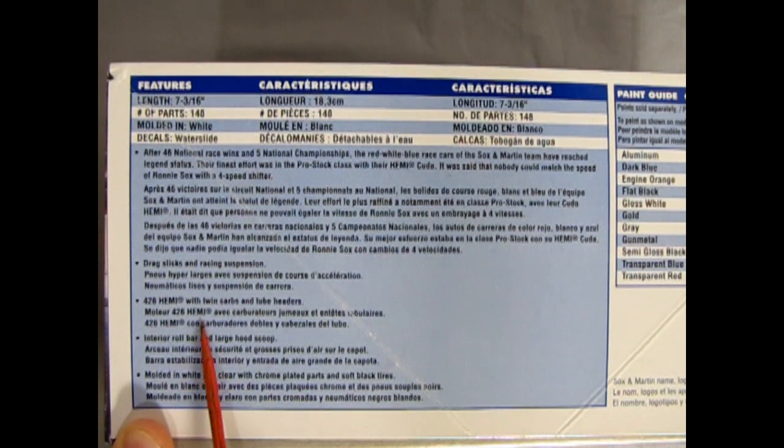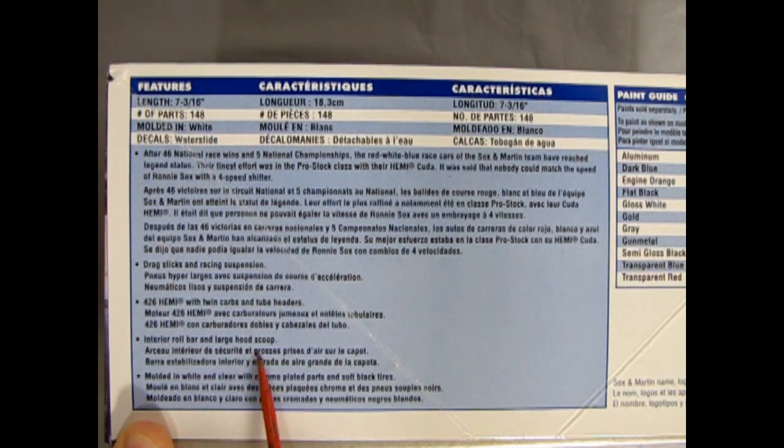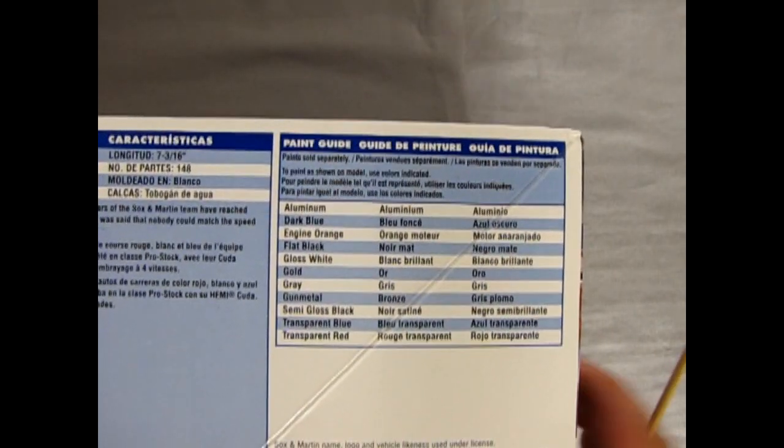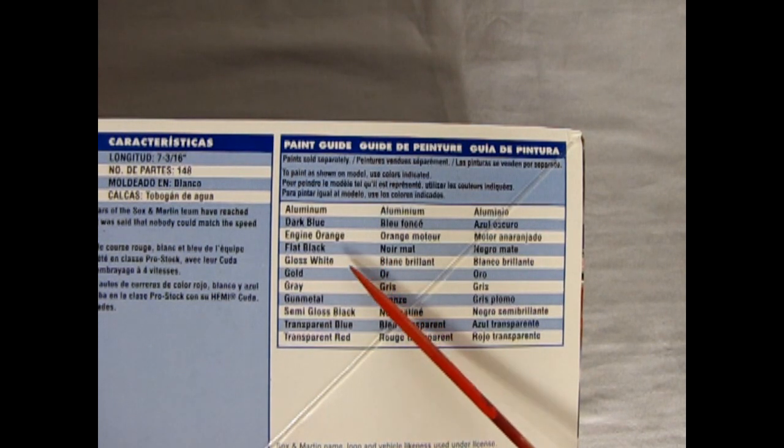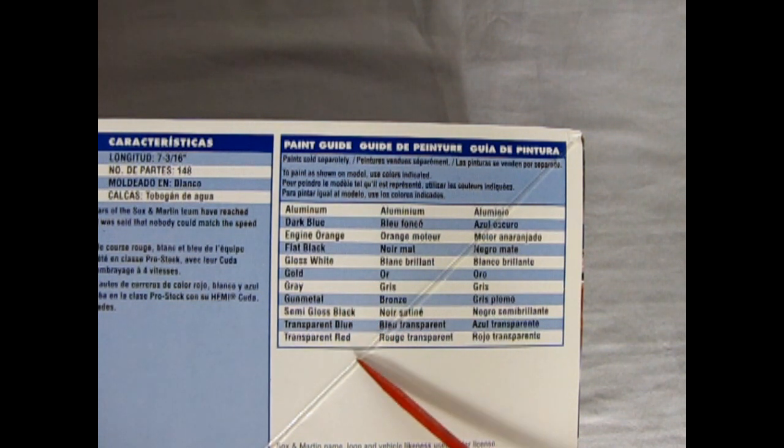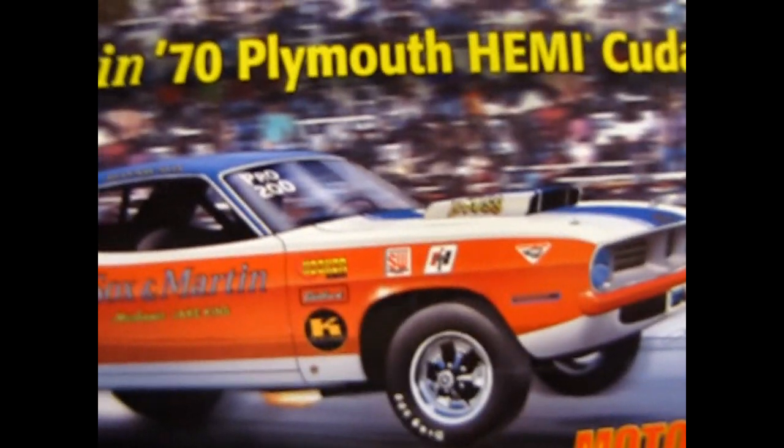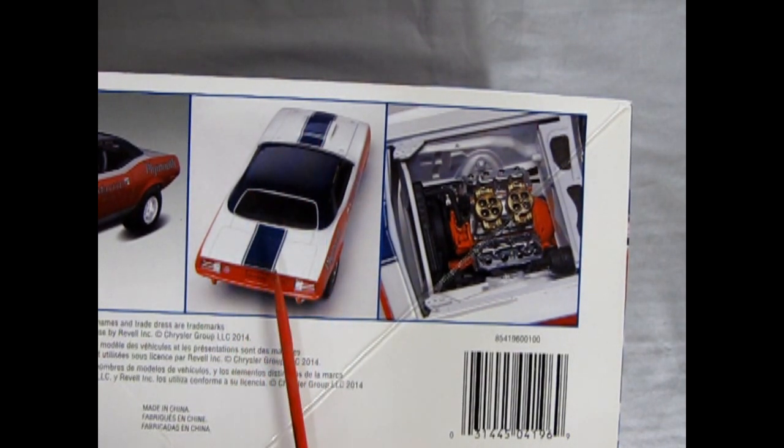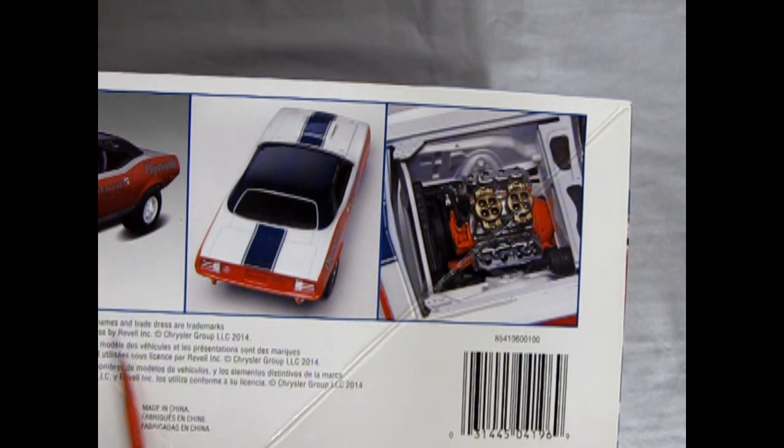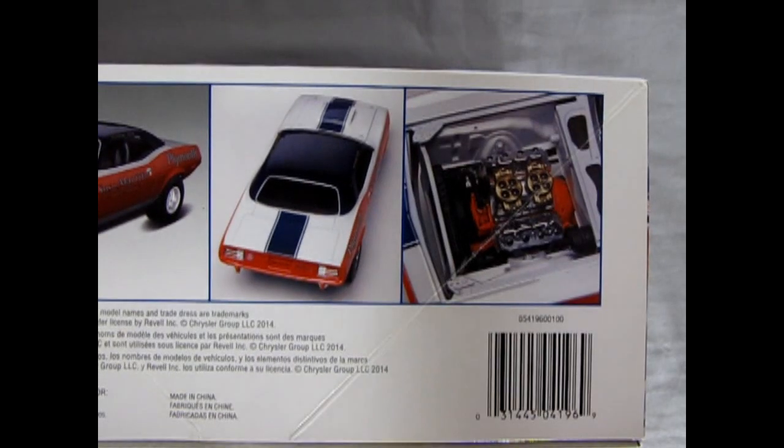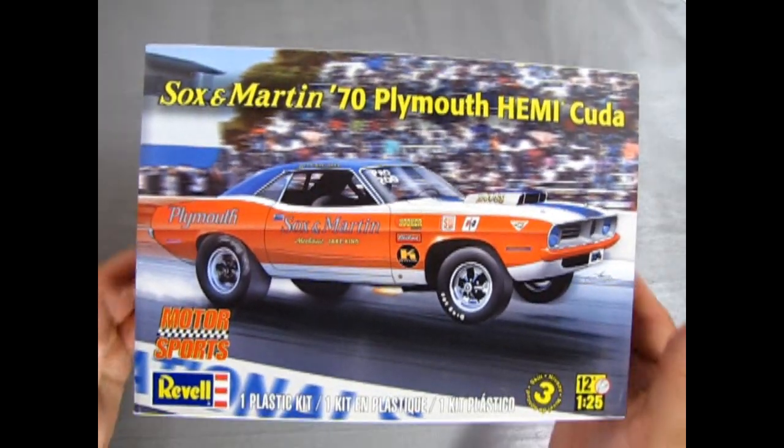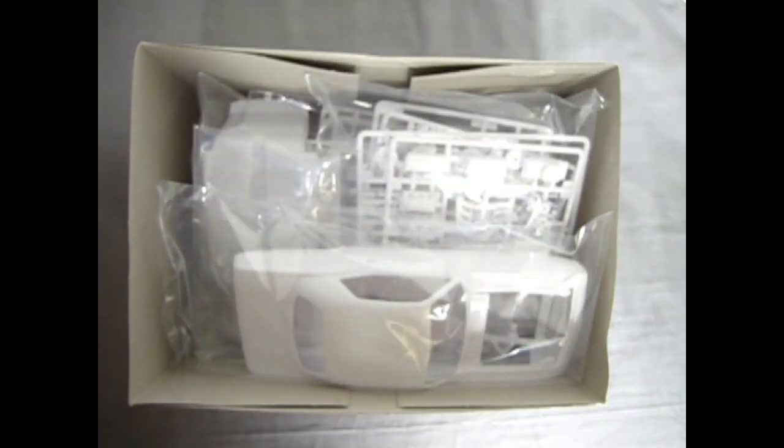We get drag slicks and racing suspension, a 426 Hemi with twin carbs and tube headers, interior roll bar and large hood scoop molded in white and clear with chrome plated parts and soft black tires. The paint colors needed include aluminum, dark blue, engine orange, flat black, gloss white, gold, gray, gunmetal, semi-gloss black, transparent blue and transparent red. The end of the box shows photographs of the real Sock'n Martin car and the model kit. This kit came out in 2014.